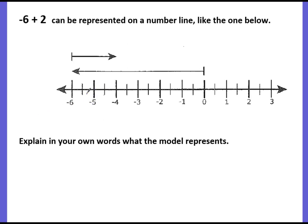Let's see if you agree. First, I see a line that goes from 0 to negative 6, so the length of that line is negative 6. Then there's another line above it that starts at negative 6 and goes to the right, stopping at negative 4. When we move to the right on a number line, we're getting bigger, so that must be positive. Going from negative 6 to negative 5, then to negative 4, I moved two whole units. Since I stopped at negative 4, that must be my answer — negative 6 plus 2 equals negative 4.